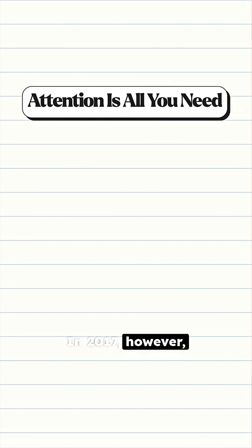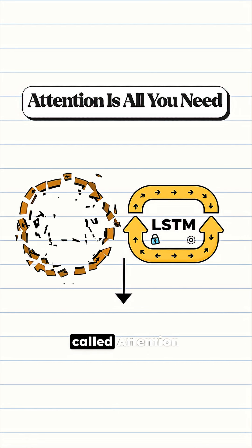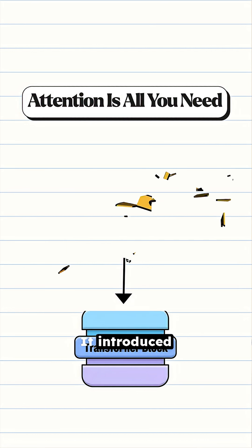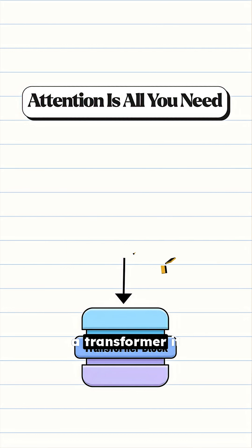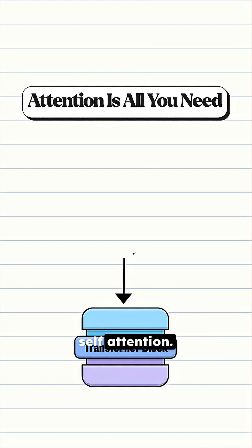In 2017, however, everything changed with the introduction of the paper called Attention is All You Need. It introduced what we call the Transformer. It threw out all of those loops and recurrence completely and replaced them with one big idea: self-attention.